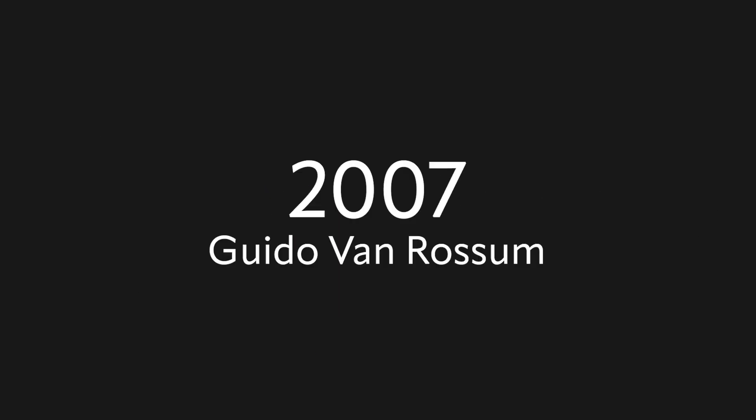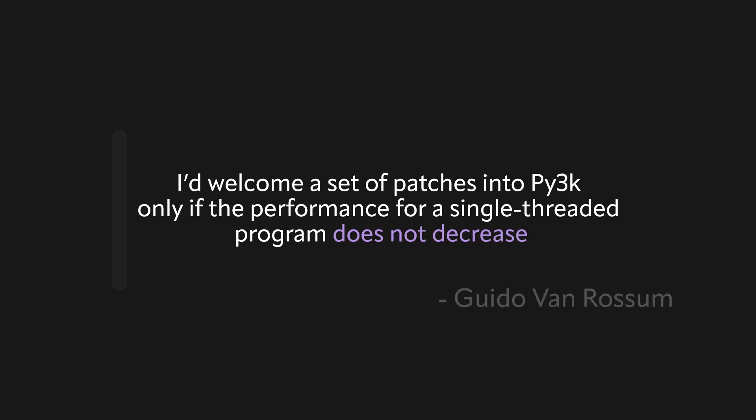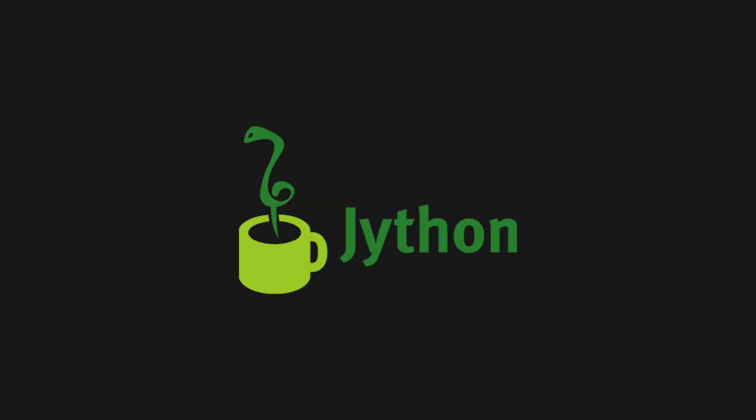The conversation has been brought up many times, and in 2007, Python's creator said, 'I'd welcome a set of patches into Py3k only if the performance for a single thread program does not decrease.' The last part is important, as removing the GIL has not sped up single thread performance, and so the GIL still stands strong. If you really want to avoid the GIL, there's always Jython, but who wants to use a Java-based system.